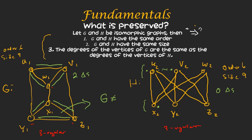Since the number of triangles is different, G and H cannot be isomorphic — even though they share the same order, size, and degree sequence. We can prove number of triangles is a structural property because an isomorphism preserves edges, so a triangle in G would map to a triangle in H. There is no complete list of structural properties that guarantees isomorphism; graphs simply have too many properties and too much complexity for such a list.